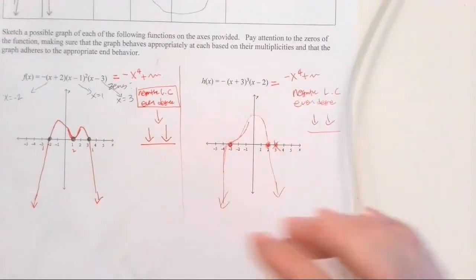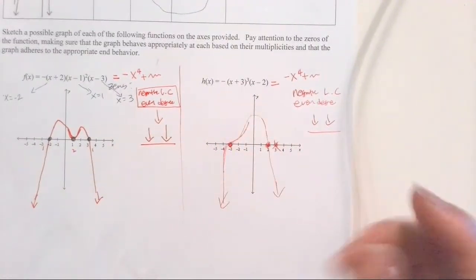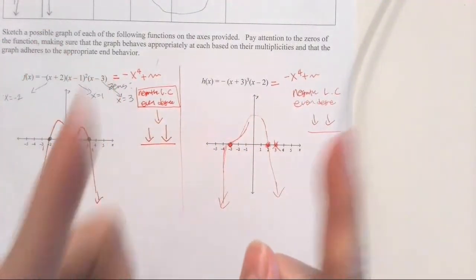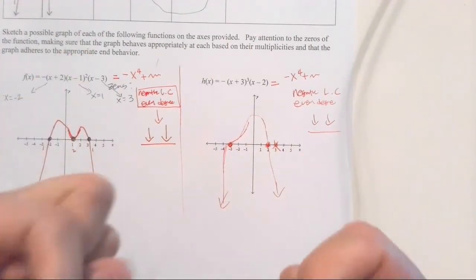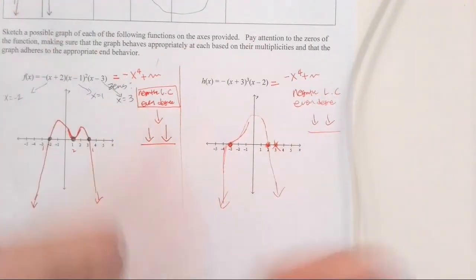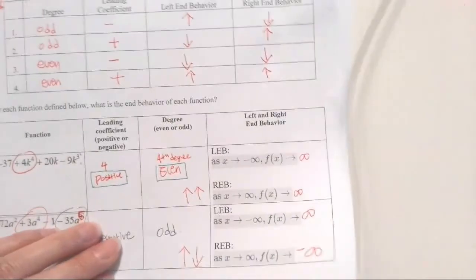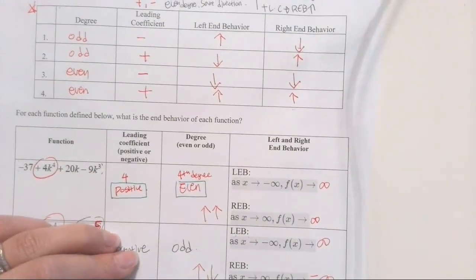So today's lesson was all about end behavior — what happens on each end of the graph. Is it going up, down, or what? So there we go. See you next class. Bye-bye.